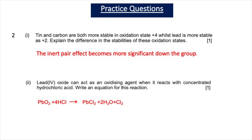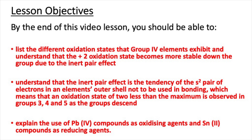For part 2, lead 4 oxide acting as an oxidizing agent with concentrated hydrochloric acid: PbO2 + 4HCl → PbCl2 + 2H2O + Cl2 — one mark for that correct equation. After watching this video you should now be able to list the different oxidation states group 4 elements exhibit, understand that the plus 2 oxidation state becomes more stable down the group due to the inert pair effect, understand that the inert pair effect is the tendency of the S2 pair of electrons not to be used in bonding, and explain the use of lead 4 compounds as oxidizing agents and tin 2 compounds as reducing agents.